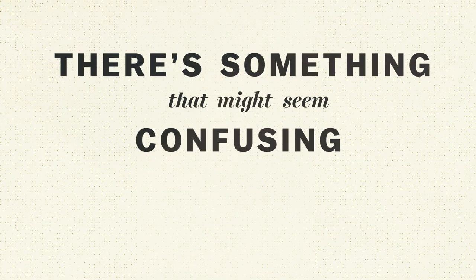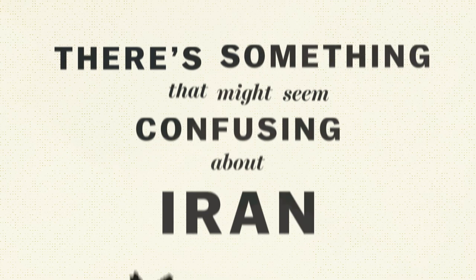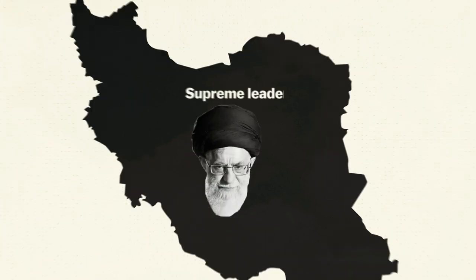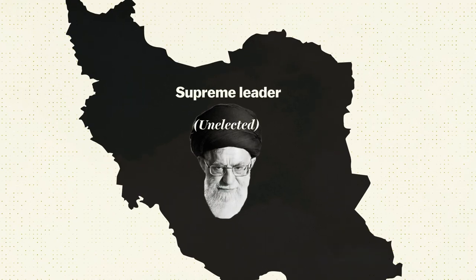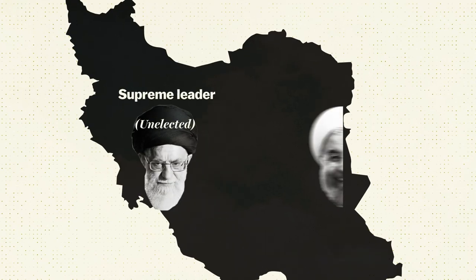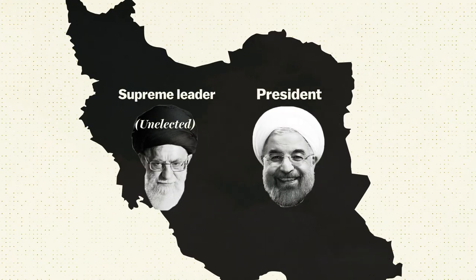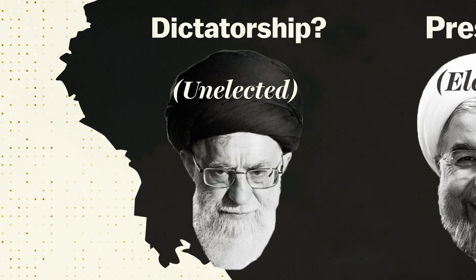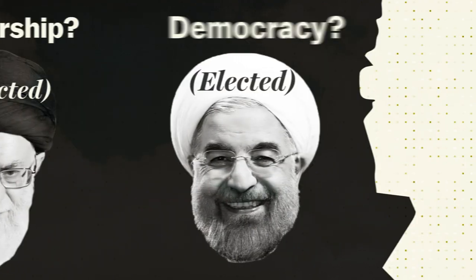There's something that might seem confusing about Iran. The country has an unelected supreme leader at the top, but it's also got a president who's democratically elected in votes that are far from perfect but sure look pretty important. So is Iran a dictatorship or is it a democracy?